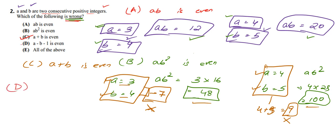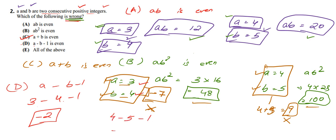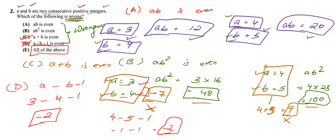Let us check option D: A − B − 1 is even. With A = 3, B = 4: 3 − 4 − 1 = −2, which is even. The result is negative but we were not told A − B cannot be negative; A and B are positive but the expression can give a negative value. With A = 4, B = 5: 4 − 5 − 1 = −2, again even. So option D is a correct statement. Since option E says all of the above are wrong, but A, B, and D are correct, option E is also not satisfied.